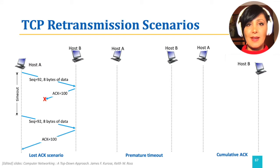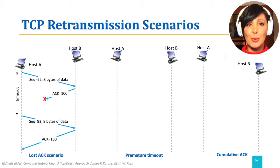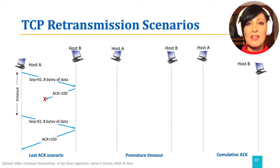host A will retransmit the segment on the event of timeout. The segment will have the same sequence number 92, and this time, hopefully, the sender will receive the ACK.